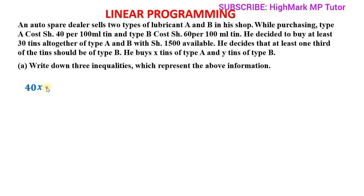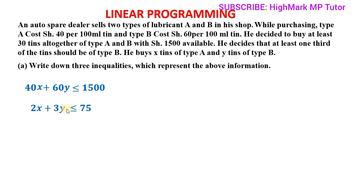Adding the cost of type B tins — 60 shillings per tin with Y tins gives 60y. We are told only 1500 shillings is available, so the total cost should not exceed 1500, giving us 40x + 60y ≤ 1500. This inequality can be simplified by dividing throughout by 20 to get 2x + 3y ≤ 75. This is our first inequality.